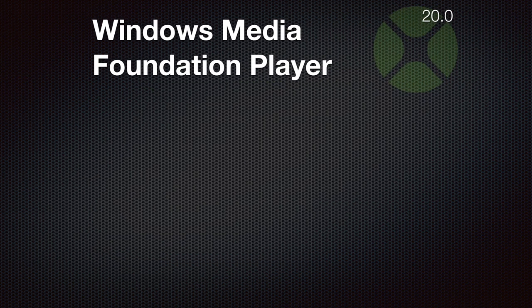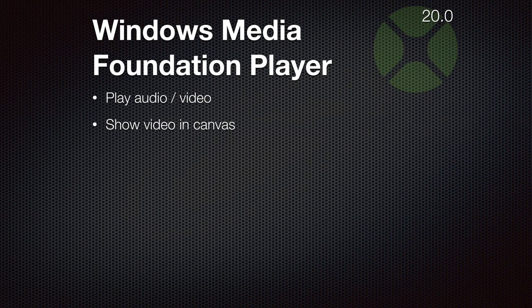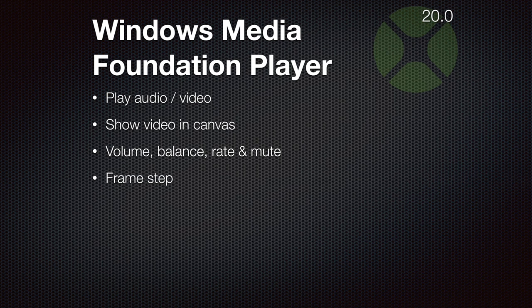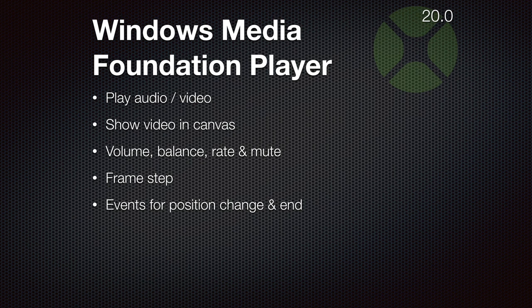Windows Media Foundation player: you can load an audio or video file and play it. You can show the video with the canvas control, change the volume, balance, rate, or mute the video. You can step through the frames of the video if needed. You get a lot of events — if the position changes within the video you can get an event and show the current position, or you get an event when the media ends and you can load the next video. If you need click events you can add a mouse down event to the canvas control, and you can use the other functions of the canvas as needed.